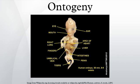Ontogeny is the origination and development of an organism, usually from the time of fertilization of the egg to the organism's mature form. Yet the term can also be used to refer to the study of the entirety of an organism's life span.